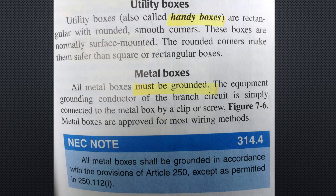Metal boxes: all metal boxes must be grounded. The equipment grounding conductor of the branch circuit is simply connected to the metal box by a clip or screw. Figure 7-6 shows a good example of this, which will show here momentarily. Metal boxes are approved for most wiring methods. NEC note 314.4: all metal boxes shall be grounded in accordance with the provisions of Article 250, except as permitted in 250.112.I.